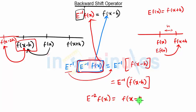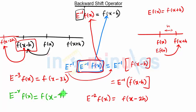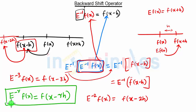Similarly, if we take the third backward shift of f(x), we get f(x-3h). So in general, E⁻ʳ of f(x) is nothing but f(x-rh). This is the generalized formula of the backward shift operator. More such operators we will see in our next video, so stay tuned for future lectures.